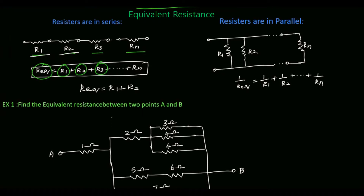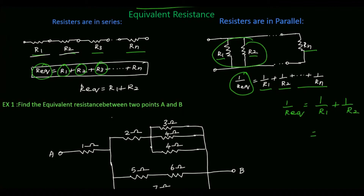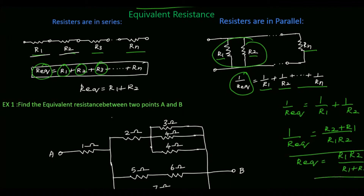Next, consider this circuit. Here the resistances R1, R2 up to Rn are connected in parallel. So for this parallel connection, 1 by R_equivalent is equal to 1 by R1 plus 1 by R2 up to 1 by Rn. Suppose we have only two resistors connected in parallel. So 1 by R_equivalent equals 1 by R1 plus 1 by R2. Taking LCM, which is R1 times R2, we get R2 plus R1 in the numerator. So if only two resistors R1 and R2 are connected in parallel, the equivalent resistance is R1 times R2 divided by R1 plus R2. You can directly use this formula.